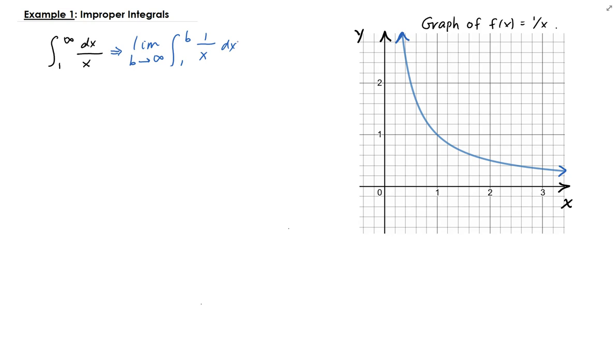Let's go ahead and proceed from here. We're going to take the integral of 1 over x, which we know is going to be natural log x. So we have the limit as b approaches infinity of natural log x.